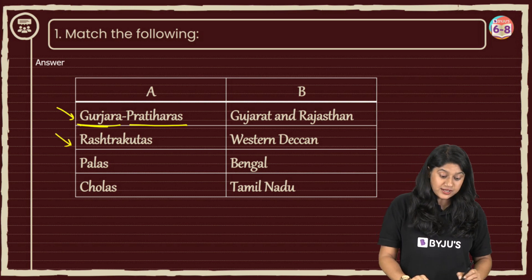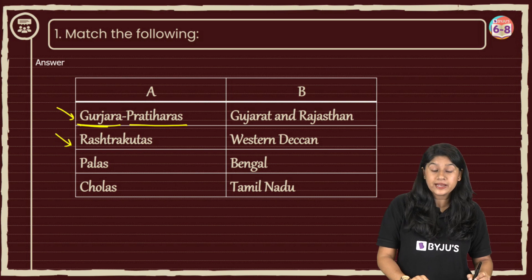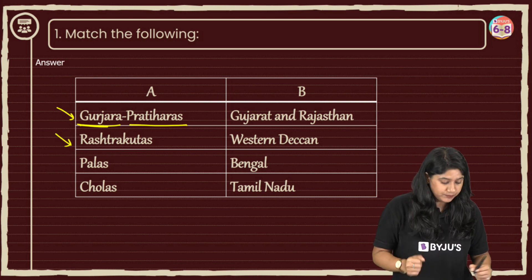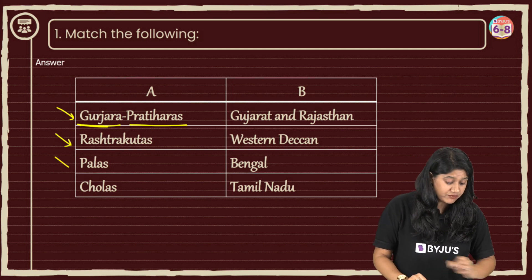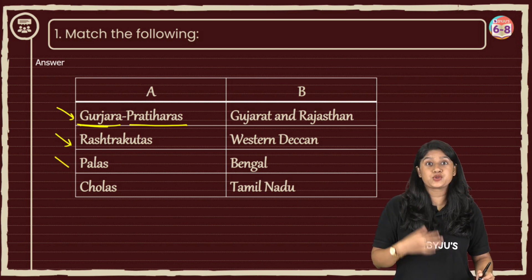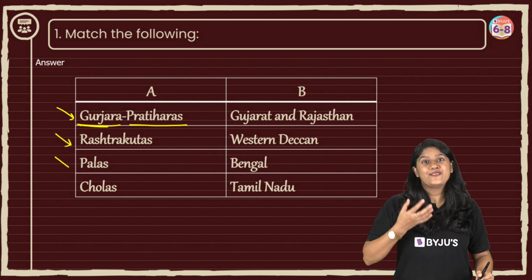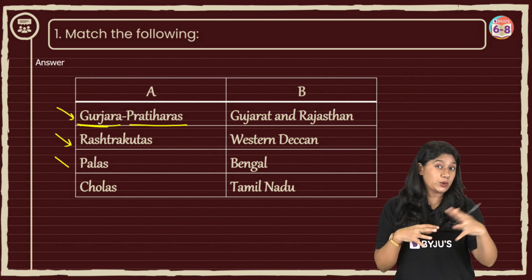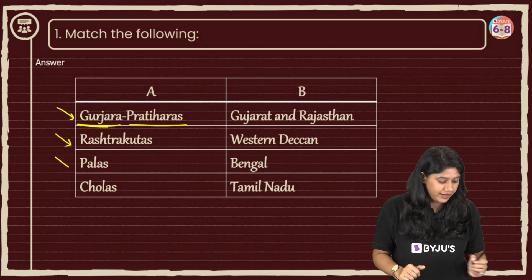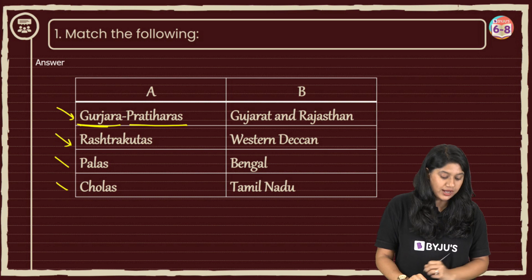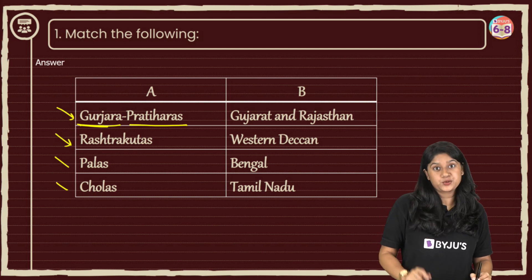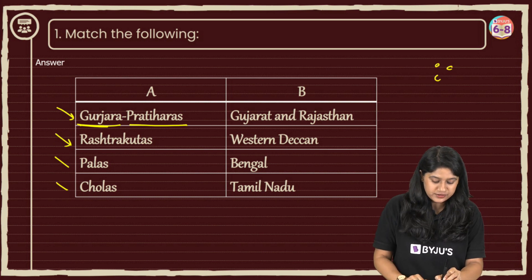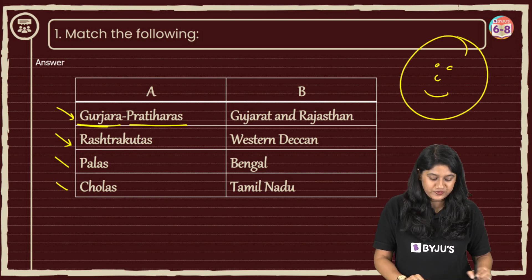Then we have Rashtrakutas — they were ruling in the Western Deccan. Then we have the Palas, which were in Bengal, and the Cholas in Tamil Nadu. Please make sure to take a note of this.